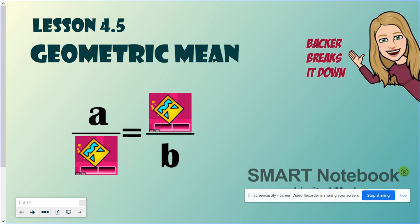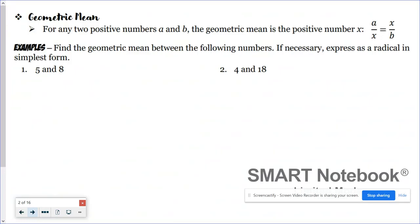Hello everyone and welcome to Backer Breaks It Down. On this episode we explore something called the geometric mean. Here's an example of a geometric mean. So what do you notice, what do you wonder? Whenever you're asked to find the geometric mean between two numbers, where a and b represent numbers, you can create a proportion like this and then solve it using a little bit of algebra.